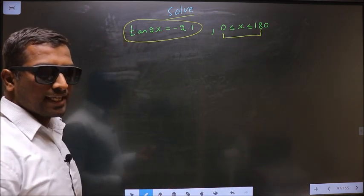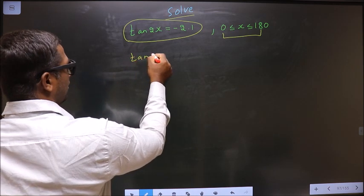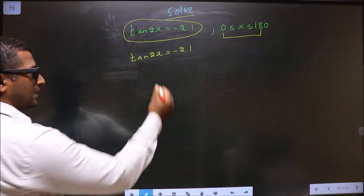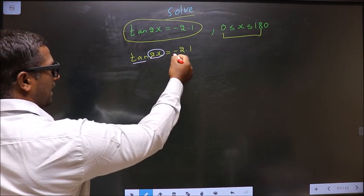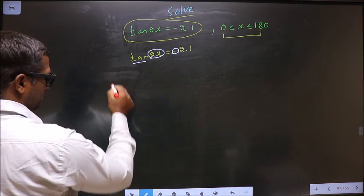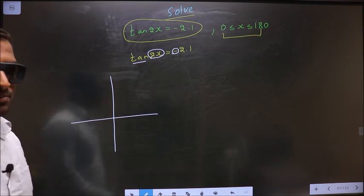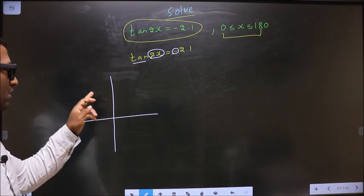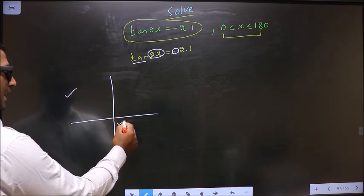First, the given equation is tan 2x equal to minus 2.1 to get the values for 2x. Here we have tan and here it is negative. So now you check in what all quadrants is tan negative. It is all silver tea cups. Tan is negative in the second and in the fourth.